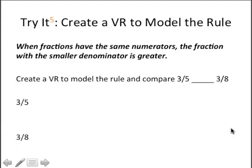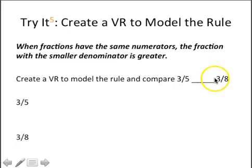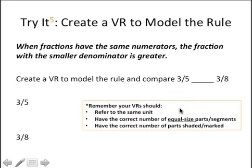You're going to try it out. You're going to create a visual representation to model the rule: when fractions have the same numerator, the fraction with the smaller denominator is greater. On your guided notes number five, create visual representations to model three-fifths and three-eighths, and then use those to compare these fractions and write a greater-than or less-than symbol to show the comparison. Remember, your two representations have to refer to the same unit, have the correct number of equal-size parts or segments, and the correct number of parts shaded or marked. Pause and then when you start the video back, we'll check your work.